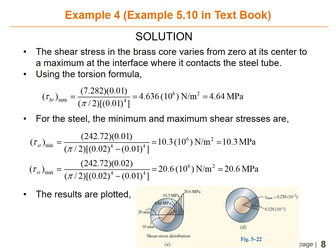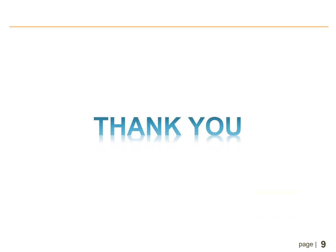For the steel, the minimum shear stress is tau_st_min equals 10.3 MPa and the maximum shear stress is tau_st_max equals 20.6 MPa. You can then plot the shear stress distribution accordingly. That concludes example number three and number four. Thank you so much.